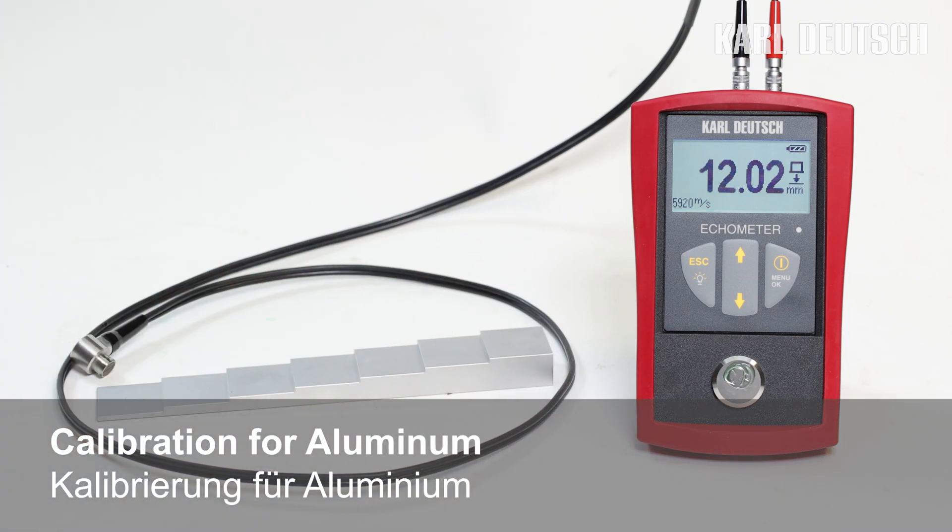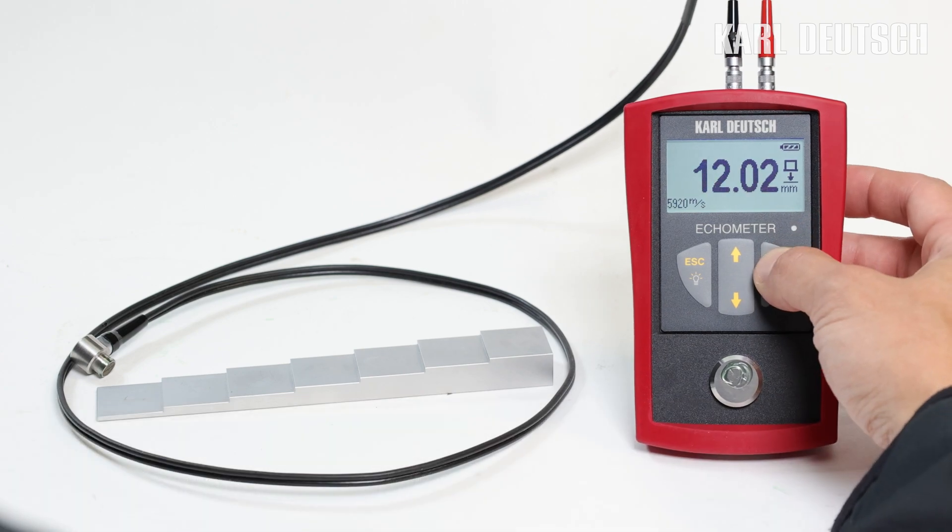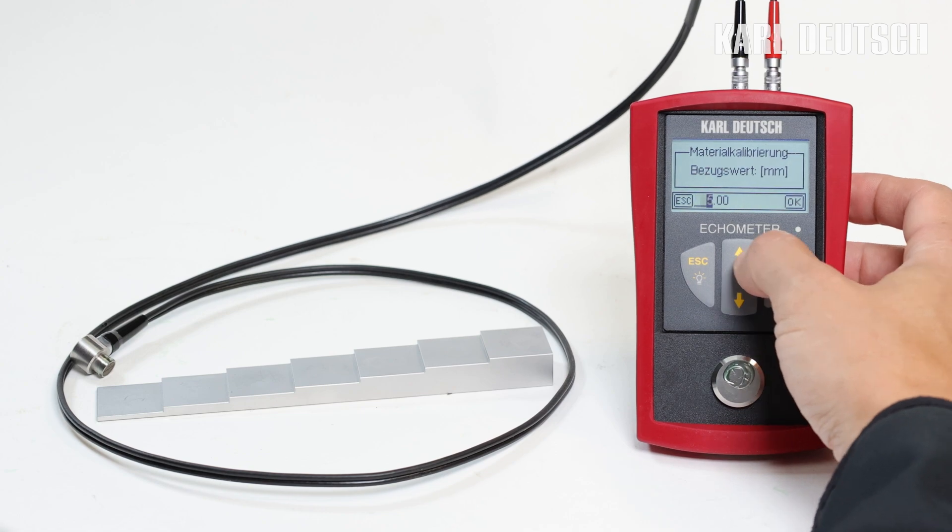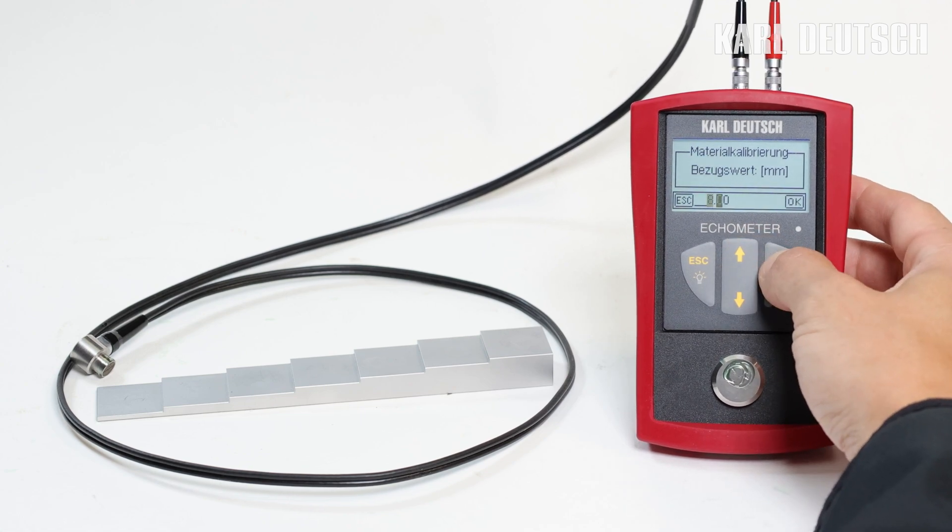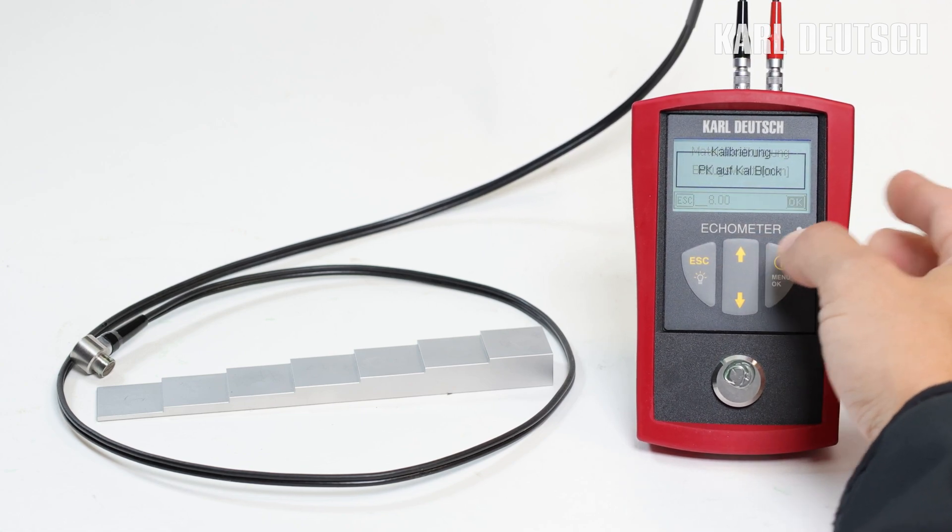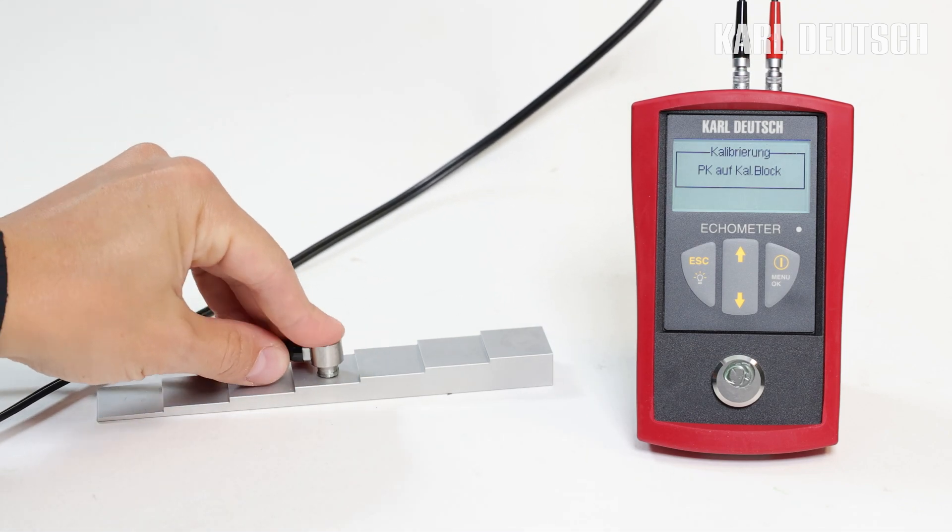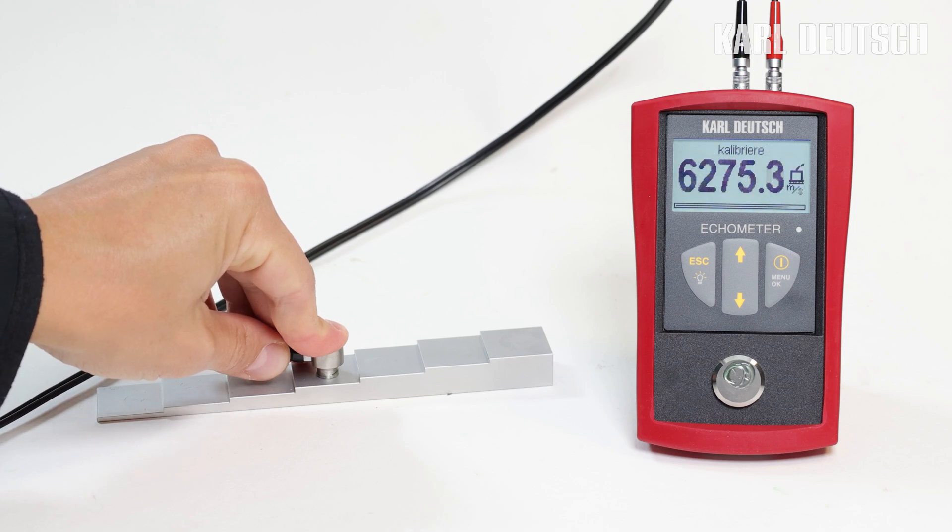How to calibrate the sound velocity I'll show you on an aluminum calibration block. To do this, select the material calibration in the menu and enter the height of the step. Then place the probe with a little coupling agent on the step. The calibration is performed automatically.